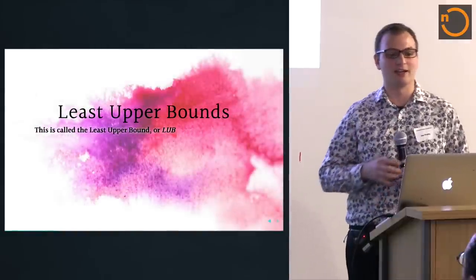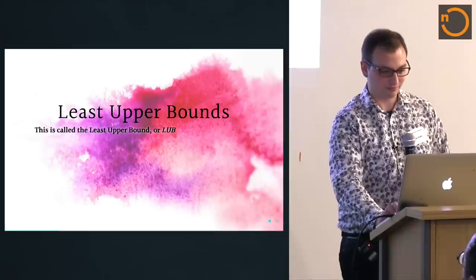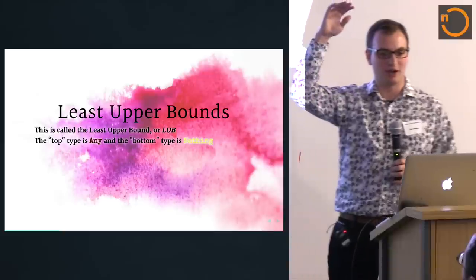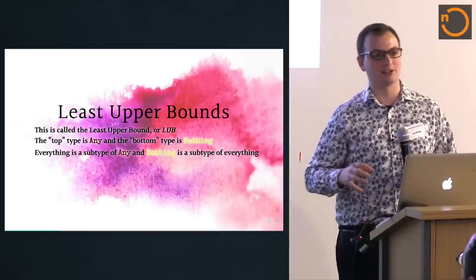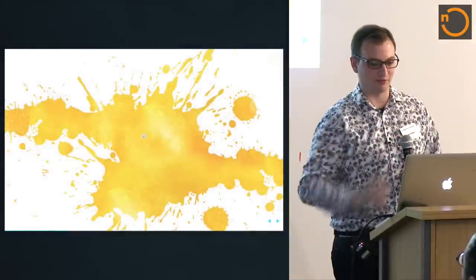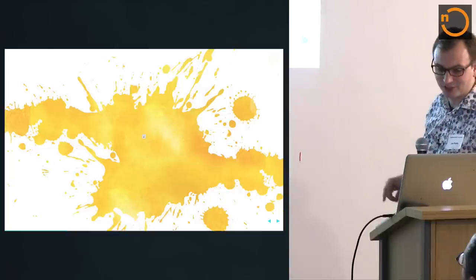This is called a least upper bound, or LUB. In our type hierarchy, Any is the top type, Nothing is the bottom type, and everything else fits between these two. There is a diagram that is missing unfortunately — it came from the Scala language spec. Imagine a diagram with Any at the top and Nothing at the bottom — that's what would be there.